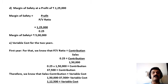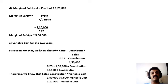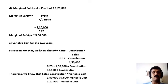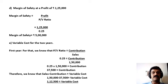Next, we have to calculate the margin of safety at a profit of rupees 1,25,000. We know the formula for the calculation of margin of safety: that is profit divided by PV ratio. So profit 1,25,000 divided by PV ratio 0.25. The margin of safety at this level will be rupees 5,00,000.